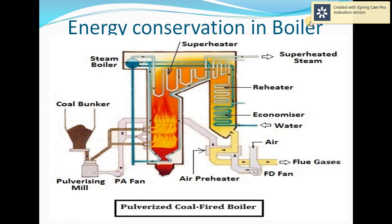A number of cycles operate in the boiler: the coal cycle, flue gas cycle, air cycle, and water cycle. These are the different types of cycles that work in the boiler. We will see how each and every cycle works.